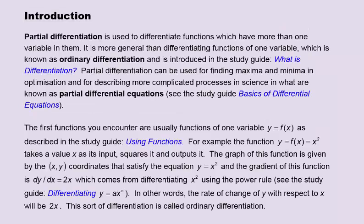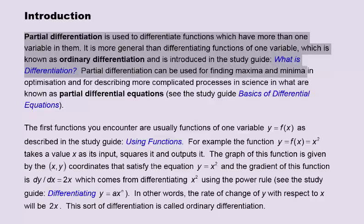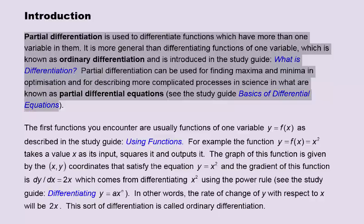Partial differentiation is used to differentiate functions which have more than one variable in them. It is more general than differentiating functions of one variable, which is known as ordinary differentiation. Partial differentiation can be used for finding maxima and minima in optimisation and for describing more complicated processes in science in what are known as partial differential equations. See study guide Basics of Differential Equations.